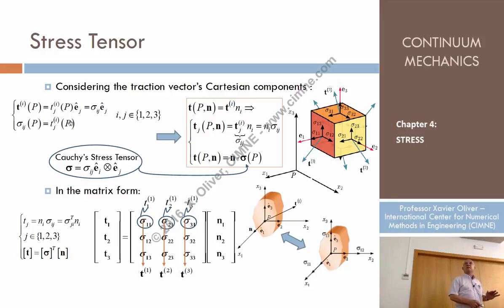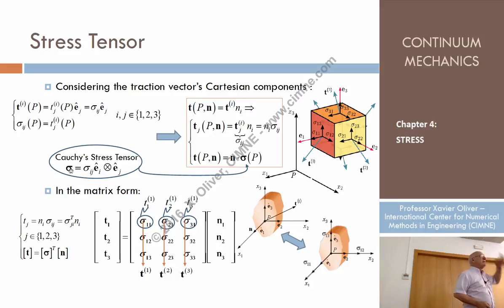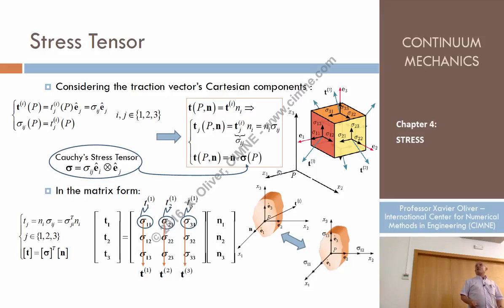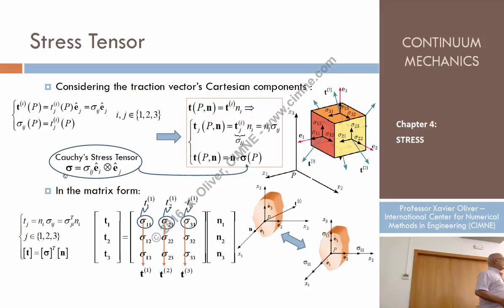The normal doesn't appear in the stress tensor definition. The normal appears in the traction equation, but not here. That is very important: the stress tensor is an entity that depends only on the point. It doesn't depend on the normal — it is a tensorial magnitude. And sigma_ij are the components of this tensor in a given coordinate system. This is the Cauchy stress tensor.